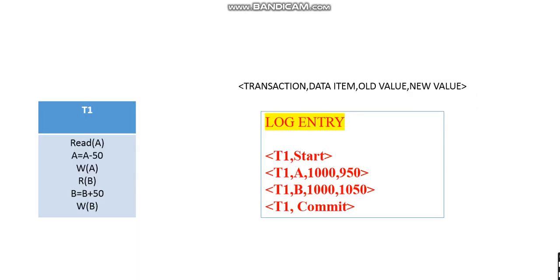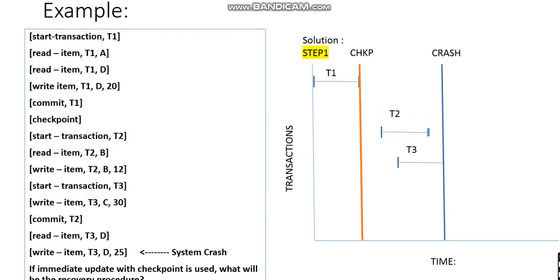That is why this method is called the undo/redo method. For the immediate modification method, you can see the log entries have both values present — old value as well as new value — for both data items A and B. This is how the log entries are maintained for the immediate modification method. Now let's look at an example with transactions T1, T2, and T3 performing certain operations in the system.